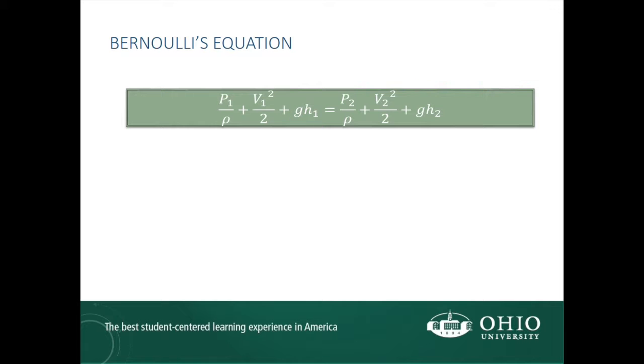Bernoulli's equation is given by the following relationship: P1 over rho plus V1 squared over 2 plus GH1 equals P2 over rho plus V2 squared over 2 plus GH2, where the left side of the equation describes the conditions at point 1 and the right side describes the conditions at point 2.